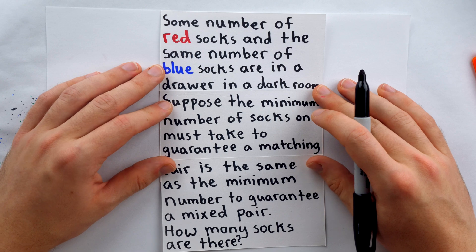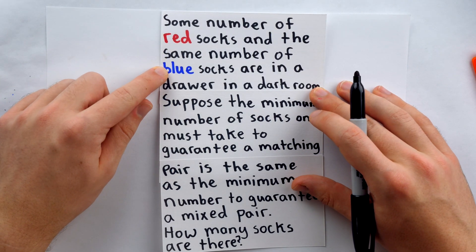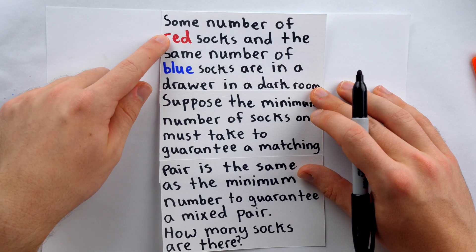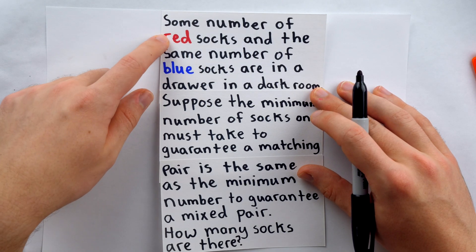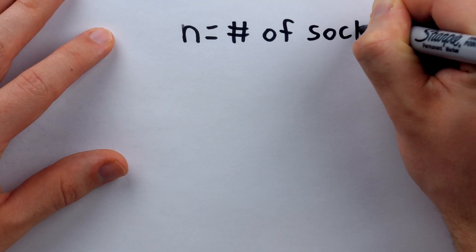Let's get some notation to represent the information that we know. There's the same number of red socks as blue socks, so we could use R and B for the numbers of red socks and blue socks, but since they're equal, why don't we just let N be the number of socks? Of course, it is our end goal to figure out what N is equal to.